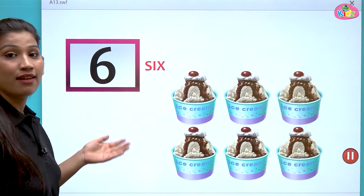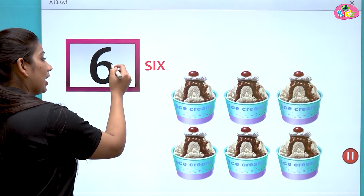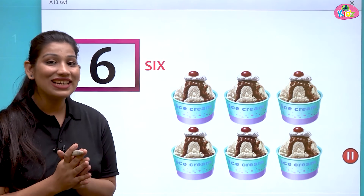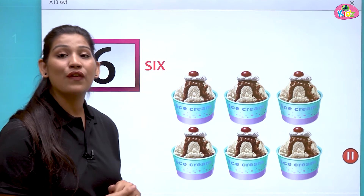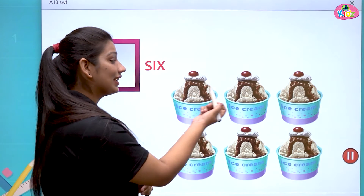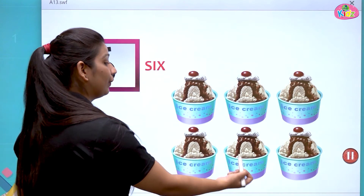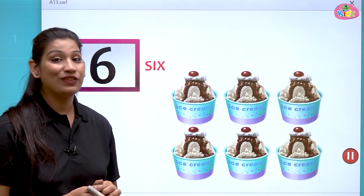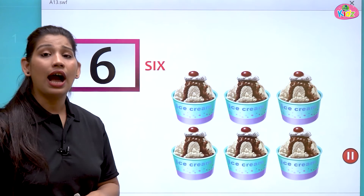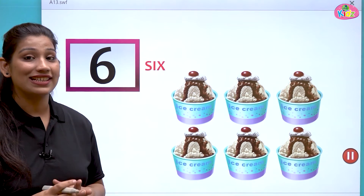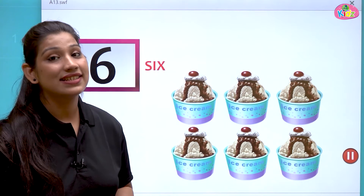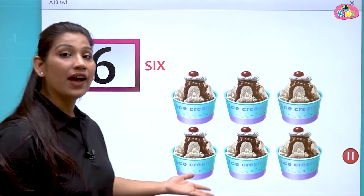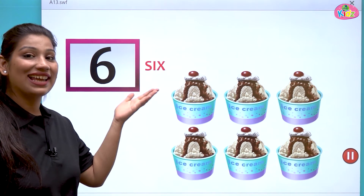After five comes number six. This is how we make number six. Here we have ice creams — they are looking so delicious. We have six ice creams. The spelling is S-I-X, six.